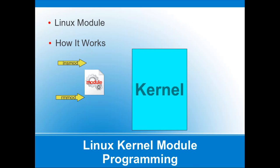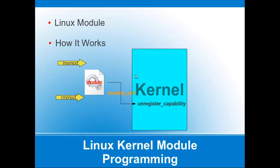When you're done with the module you use rmmod to take the module out of the kernel. One thing to note is the concept of registering and unregistering capabilities. When the module is inserted into the kernel it gives the kernel a bunch of descriptive information telling it what type of module it is, what it's able to recognize, read, and what it can do. That's what registering and unregistering capabilities is all about.